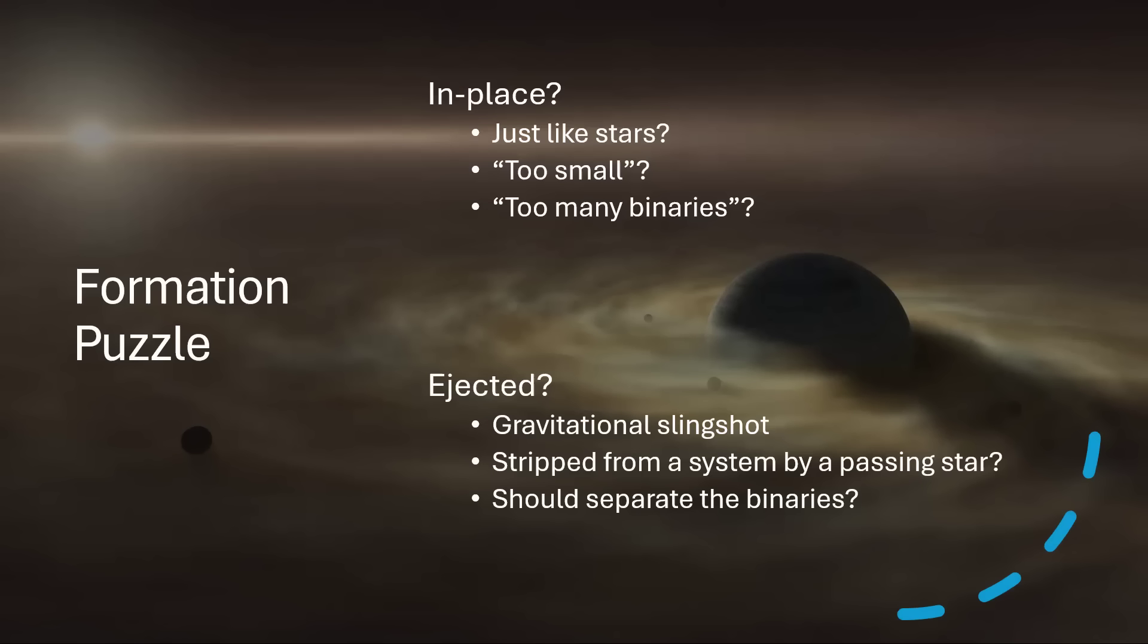The other way that they might get created is in orbit around a star, as we think occurred in our solar system. We have simulations that suggest we possibly started with a total of five gas giant planets and that one was subject to a gravitational slingshot and hurled out due to a close encounter in the chaos of the early solar system.